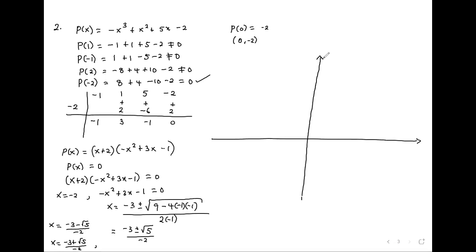Student question: since there's negative 3 and negative 2 in the denominator, can the negatives cancel? Yes, they must cancel: it becomes 3 plus root 5 over 2, and the other one becomes 3 minus root 5 over 2.